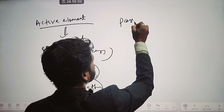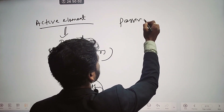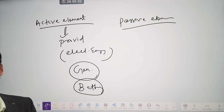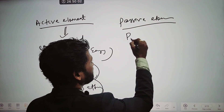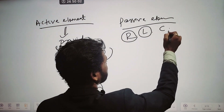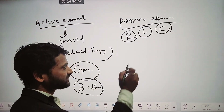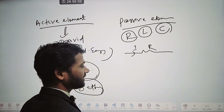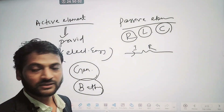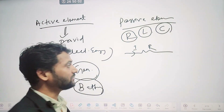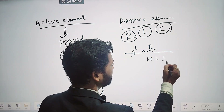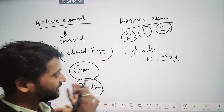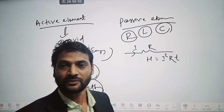Next is passive element. Passive elements are those elements which consume electrical power. Like your resistor, inductor, and capacitor — these are the passive elements. In case of resistor, if we provide some current to it, the resistor will consume that energy and it will be dissipated in terms of heat. That energy will be I²RT.